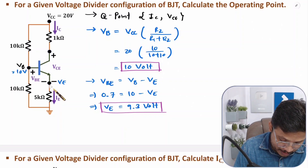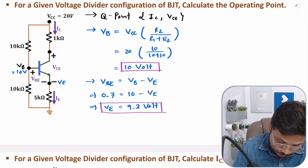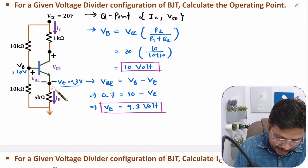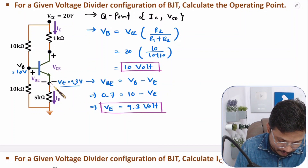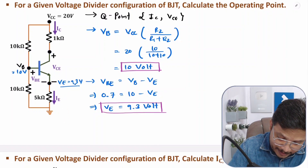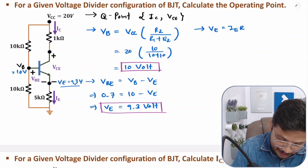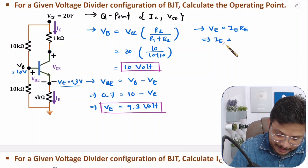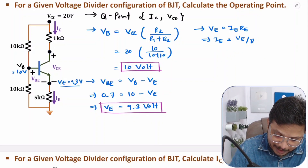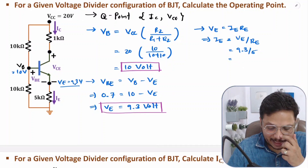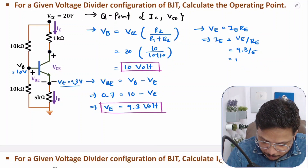Now from VE we can find IE. VE is 9.3 volts, and since we are grounding this emitter resistance, VE equals IE times RE. So IE equals VE divided by RE, which is 9.3 divided by 5 kilo-ohms, giving 1.86 milliamps.